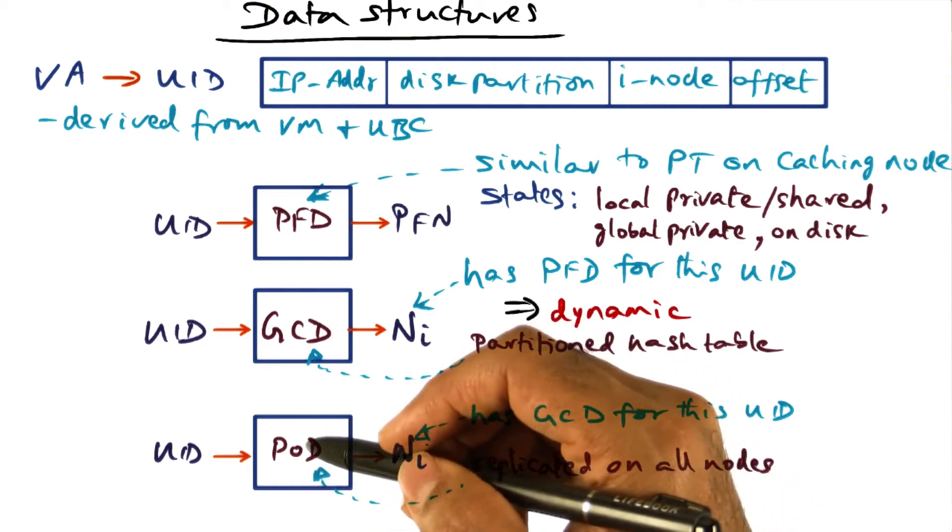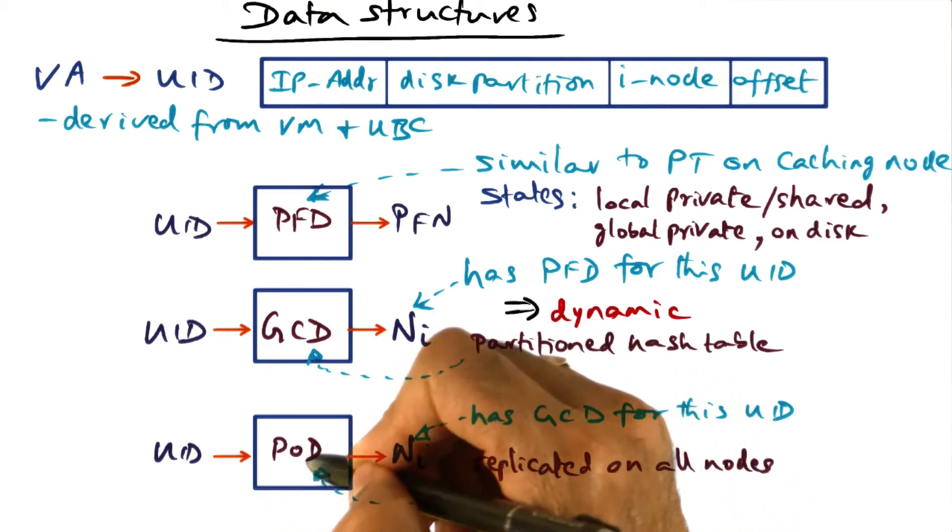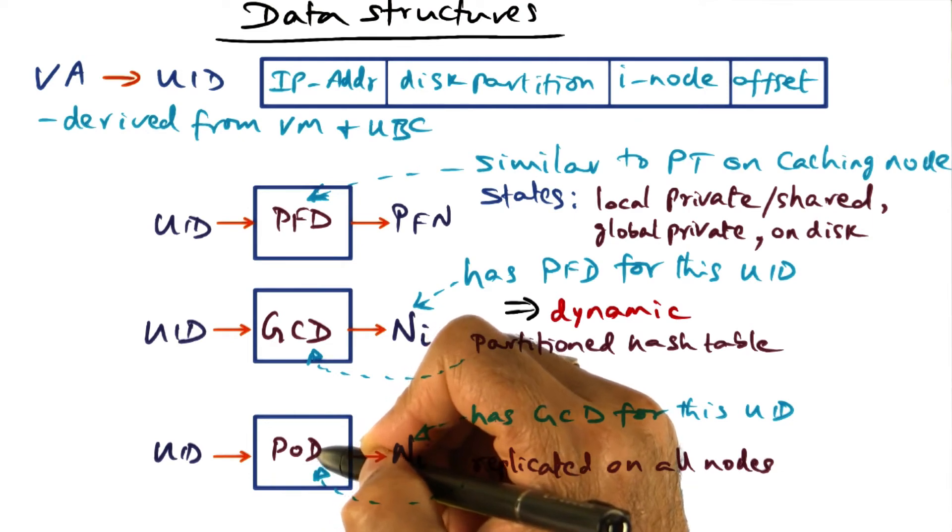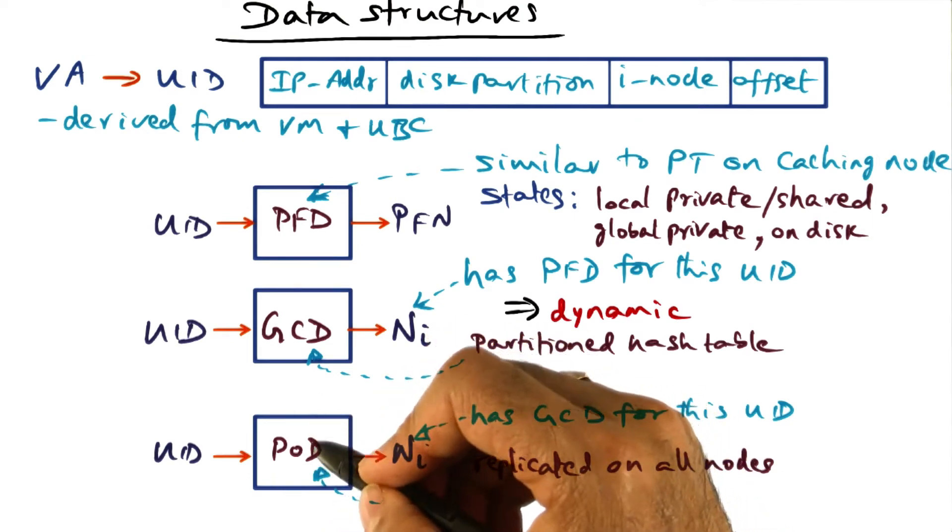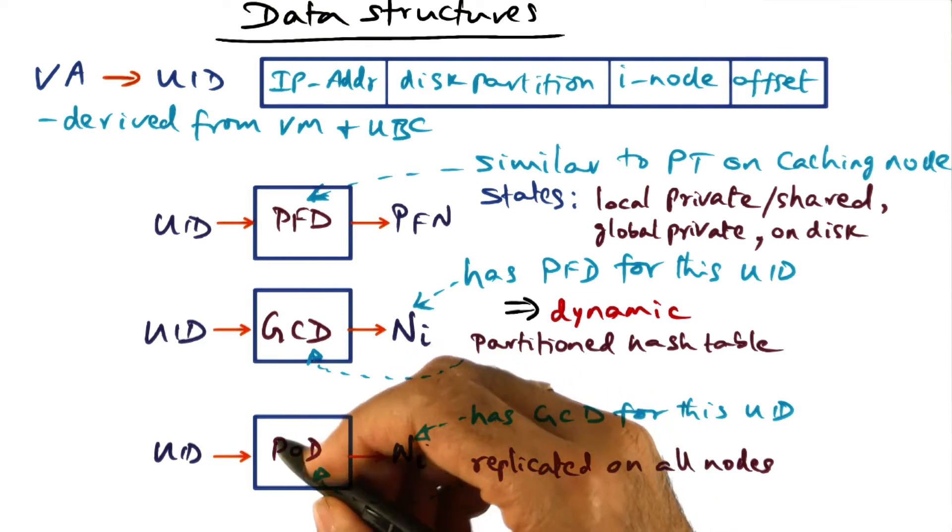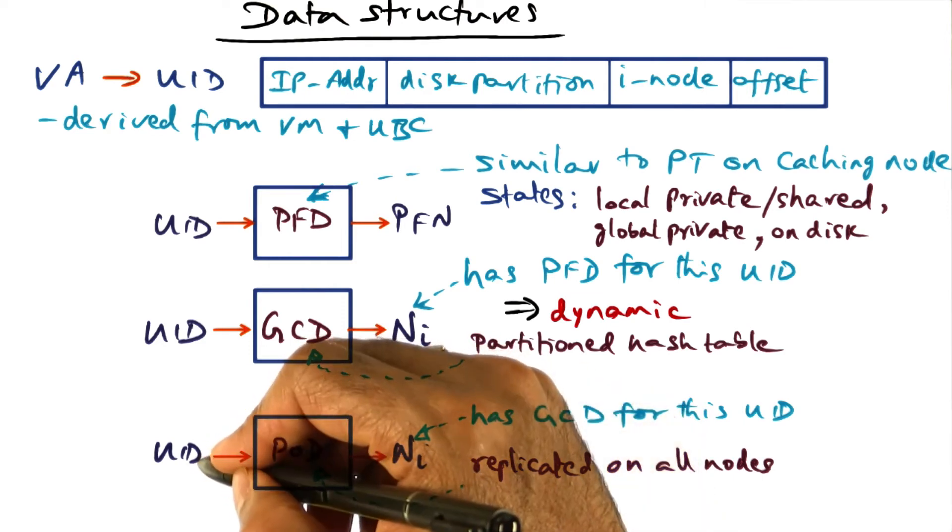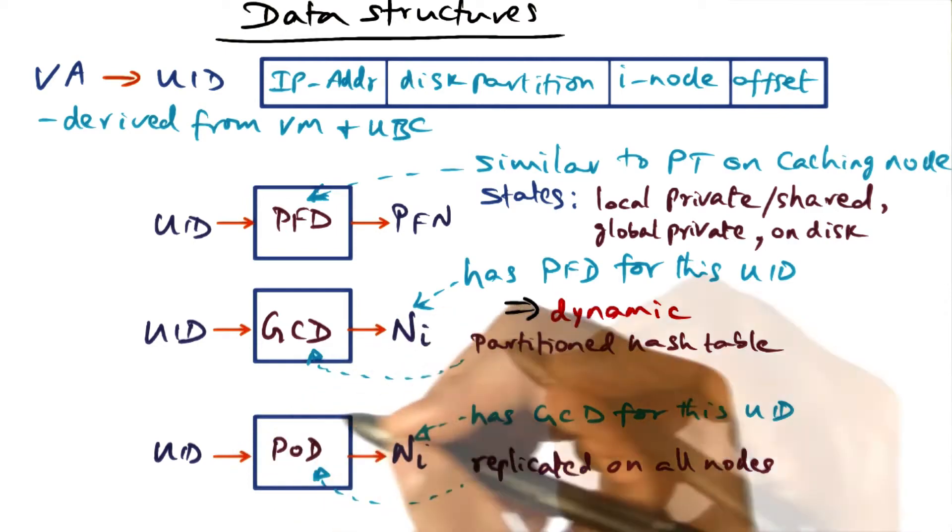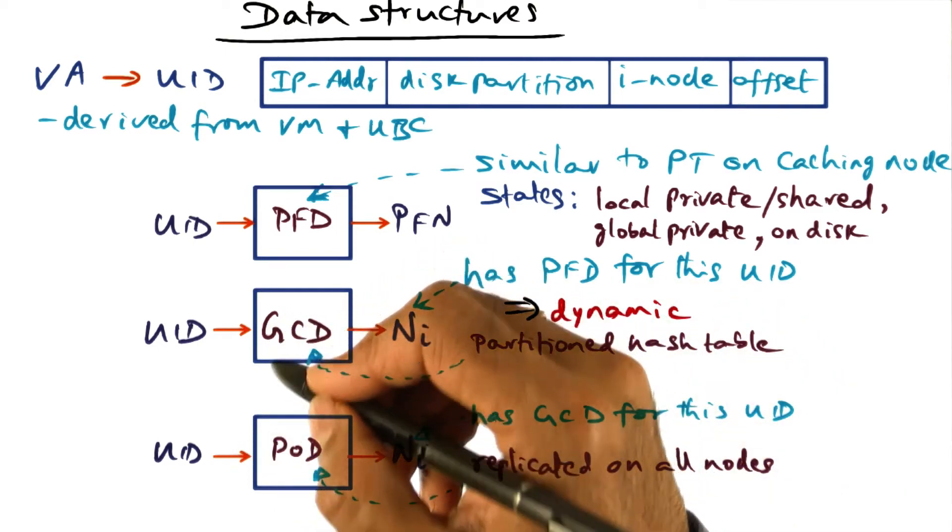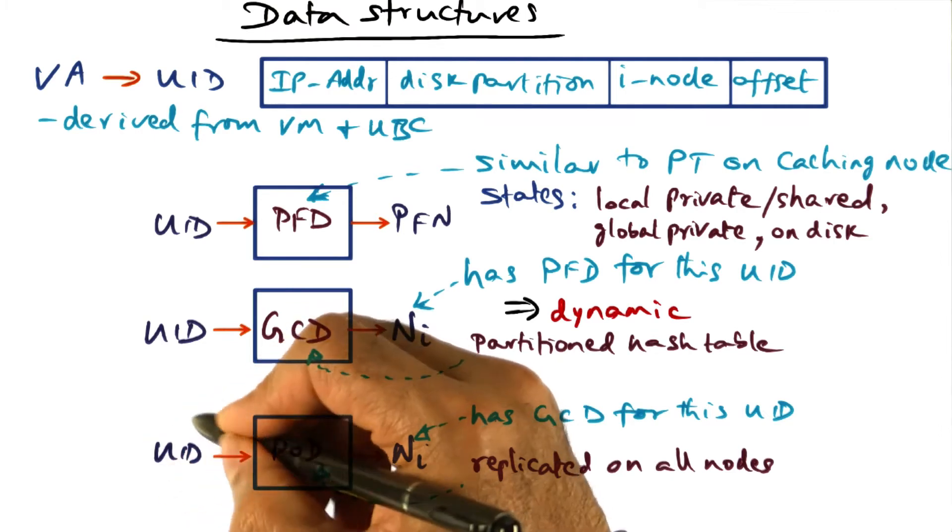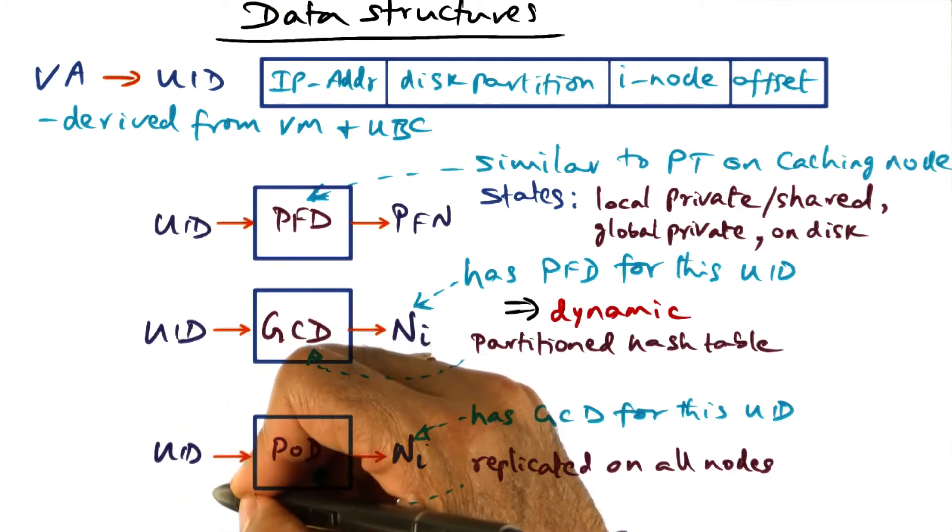So when I have a page fault, first thing that I'm going to do is go to my POD, and that is a replicated data structure. It's complete information, up-to-date information. So I go to this POD and ask, given this UID, how do I find out the global cache directory that has the information about the PFD that can help me to map my virtual address to a physical address?